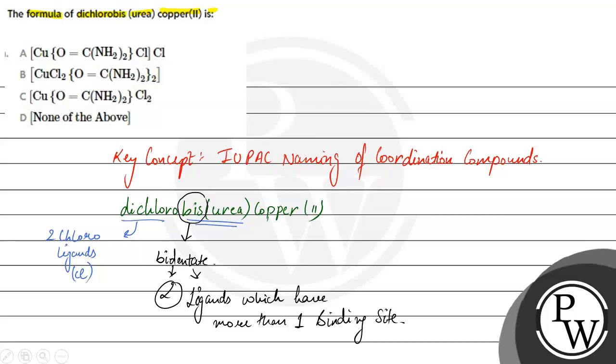Those ligands which have one binding site, what do we use for? Bis, tris. So this is urea. Urea has two binding sites. It has two binding sites. So this is bidentate.